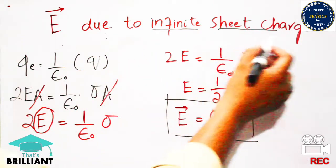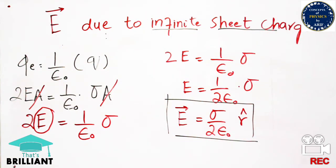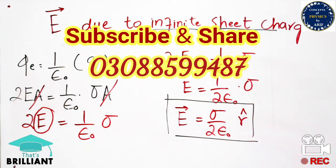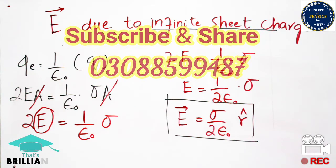This is the final expression for electric field intensity due to an infinite sheet of charge. In this video we discussed electric field intensity for an infinite sheet of charge. We drew the infinite sheet, made it finite, distributed positive charges equally, defined the surface charge density sigma, constructed a cylindrical Gaussian surface, and calculated the electric field intensity as a vector quantity. If you have any questions, you can contact me or WhatsApp me. Thank you so much.